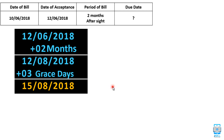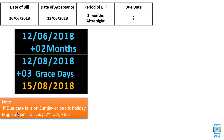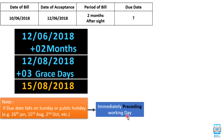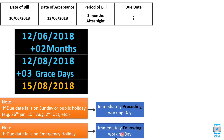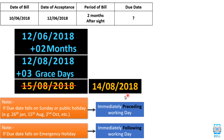However, if you write 15th August as your final answer, it will be wrong. Remember: if the due date falls on a Sunday or public holiday, you have to take the immediately preceding working day. But if the due date falls on an emergency holiday — meaning a holiday declared suddenly — then you have to take the immediately following working day. Since 15th August is a public holiday, we take one day earlier, so the final answer is 14th August 2018.